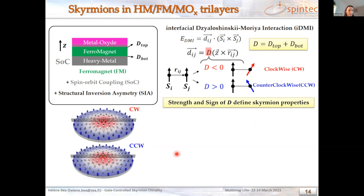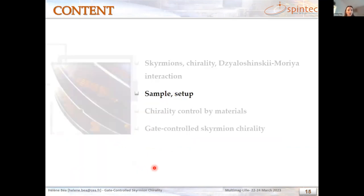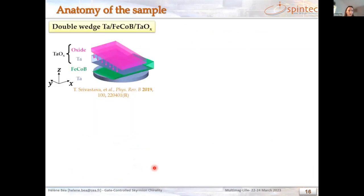Skyrmions can be moved by a current. If we inject a current into the heavy metal, the spin Hall effect converts the charge current into a spin current injected into the ferromagnet. Depending on the chirality of the skyrmion, the spin-orbit torques create a force in opposite directions: skyrmions tend to move parallel to the current in the clockwise case and antiparallel to the current in the counterclockwise case. This current-induced motion is therefore a probe for chirality.